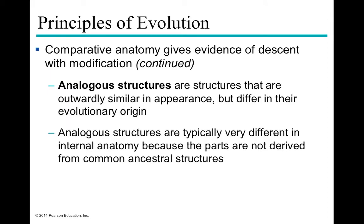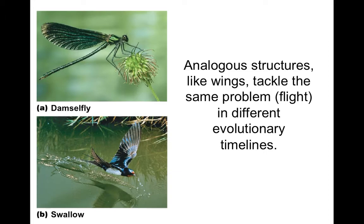Analogous structures are similar in appearance but different in evolutionary origin and internal anatomy — they did not arise from a common ancestor. A damselfly and a swallow both evolved wings to solve the challenge of flight, but from entirely different lineages and in different evolutionary timelines on non-homologous structures. This is the key distinction: homologous structures share a common ancestor; analogous structures share a common function but not ancestry.